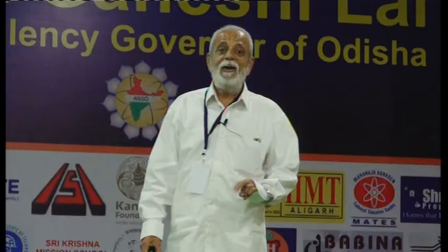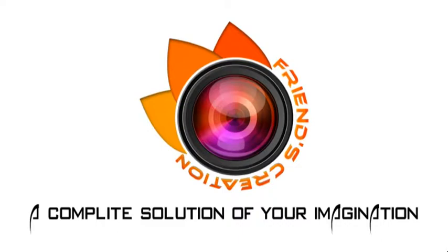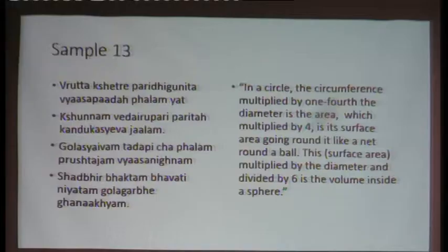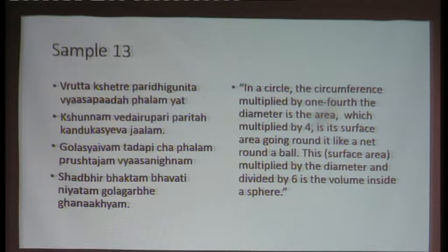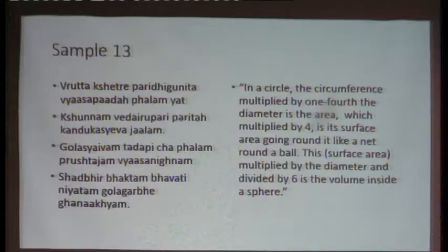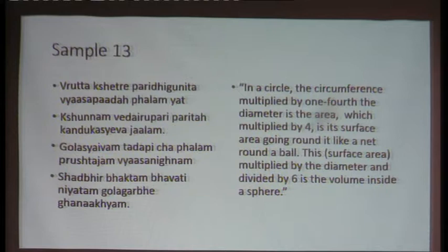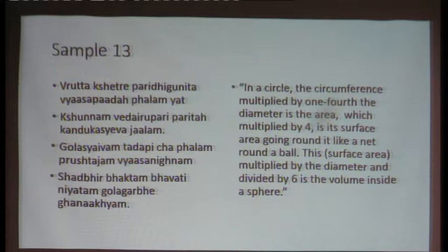Sample 13 is a shloka of the second Bhaskaracharya, who was more a poet than a mathematician. He uses several kinds of meters. This one uses the Mandakranta meter, similar to Kalidasa's Megha Sandesha. Mathematical formulas are sung as poems. In a circle, the circumference multiplied by one-fourth of the diameter is the area. Multiplied by 4, that gives the surface area of a sphere. This surface area multiplied by the diameter and divided by 6 gives the volume inside the sphere — exactly the same as 4/3 πr³.